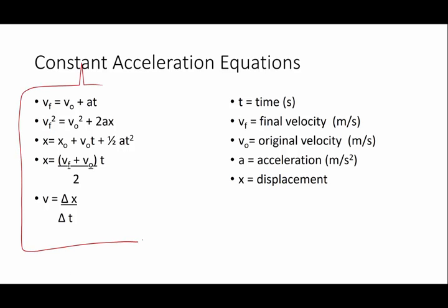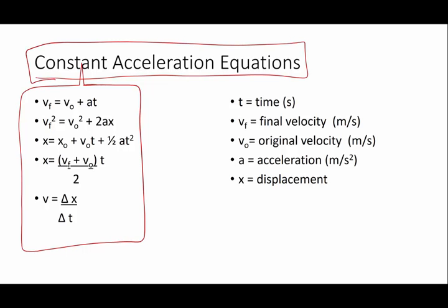This group is our collection of constant acceleration equations. These are each one of those equation variables defined. Let's read through these to make sure you have them right. I highly recommend you write these on your formula sheet. Final velocity is original velocity plus acceleration times time. Final velocity squared is original velocity squared plus 2 times acceleration times displacement.